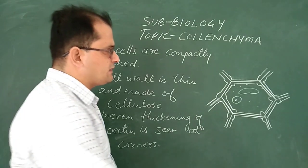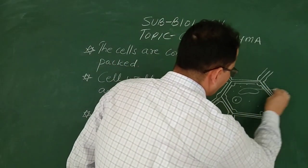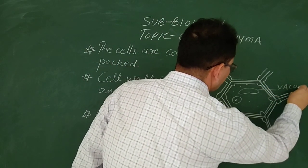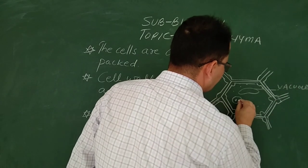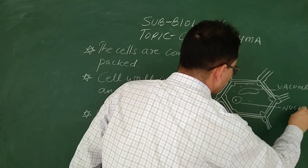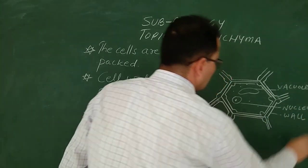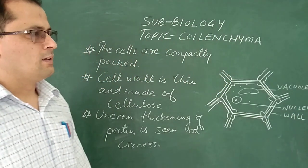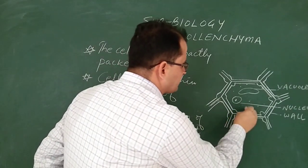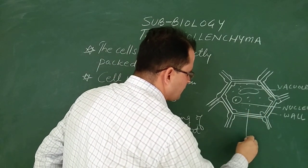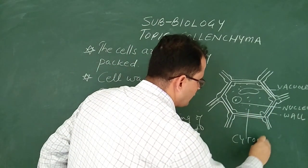Now you can see this is vacuole, this is nucleus, this is cell wall, and it contains the jelly-like substance. It is known as cytoplasm.